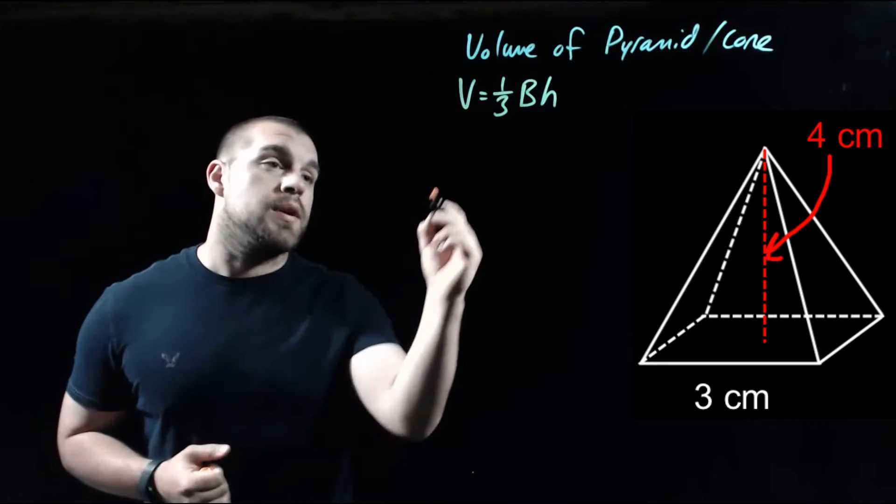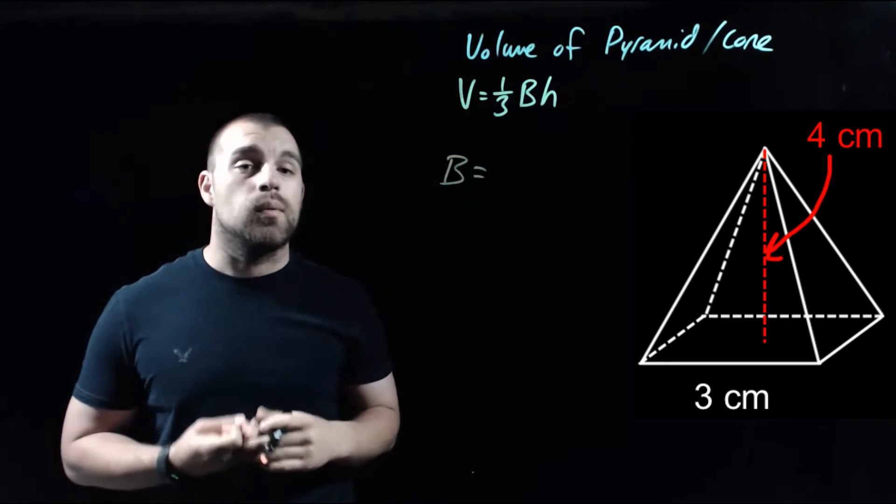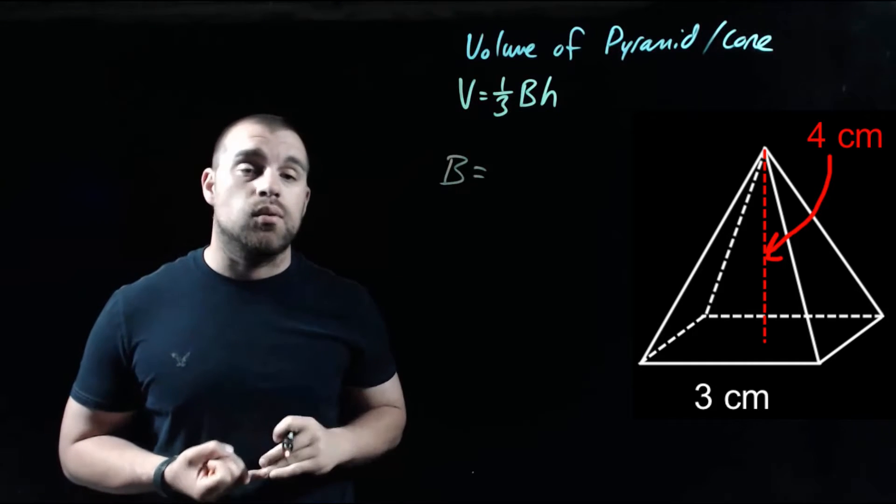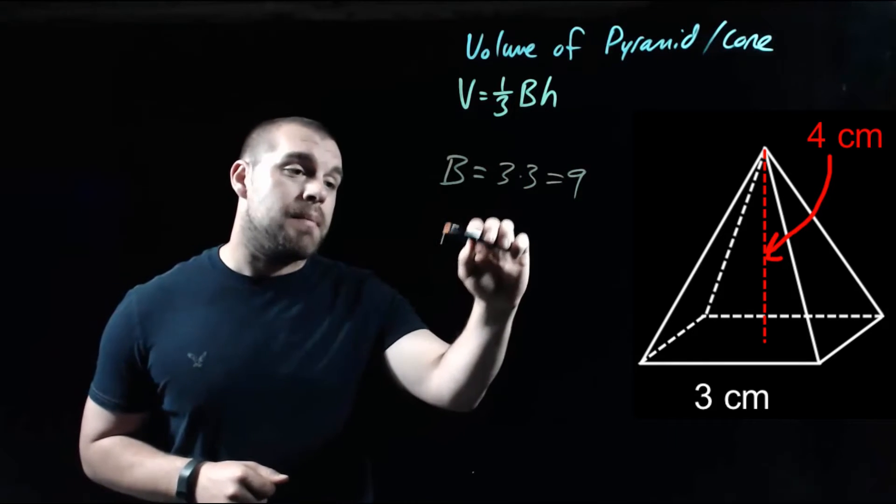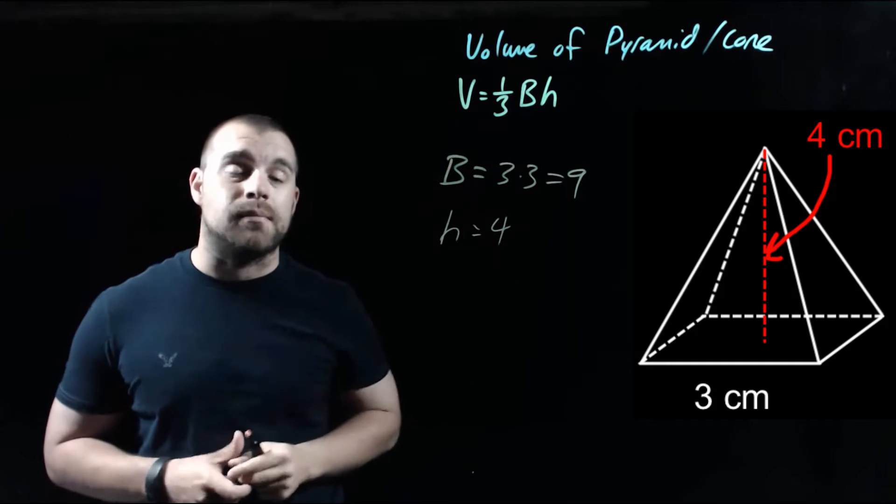In order to find the volume of this pyramid, first thing we're going to need is the area of the base. Since it's a square with side lengths of three, we can think about it as base times height or length times width. Either way we're taking three times three. So we get nine as that area of the base. And then I mentioned that we were going to use that height of four that runs from our apex down to the bottom of our base.